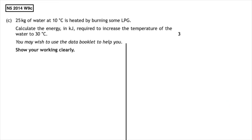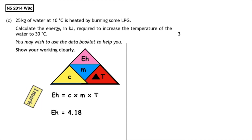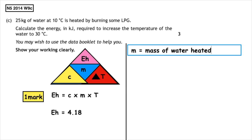This past paper question is from National 5, 2014, written paper question 9c. It asks us to calculate the energy required to increase the temperature of water to 30 degrees. We write Eh is equal to CmΔT and substitute in the heat capacity of water from our data booklet as 4.18 — that gets us one mark. We look for the mass of water, which is given in kilograms, so there is no need to do a unit conversion — we can put it straight into the calculation.